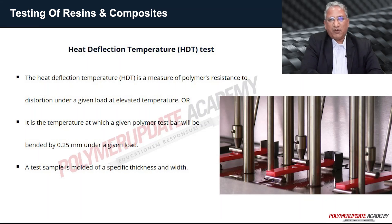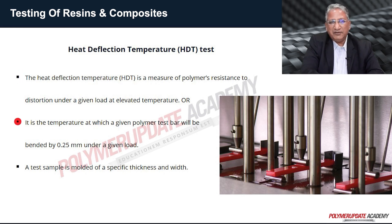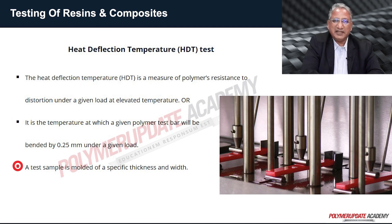The next important test for polymeric composites is heat deflection temperature (HDT). HDT is a measure of a polymer's resistance to distortion under a given load at elevated temperature, or it can be defined as the temperature at which a given polymer test bar will be deflected by 0.25 mm under a given load.